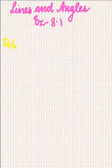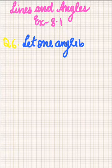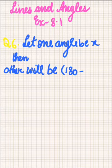First of all, we are given the difference between the 2 supplementary angles, and the difference is 48 degrees. We can suppose that let 1 supplementary angle be X. Then the other will be 180 minus X, because since these are supplementary angles, their sum will be 180 degrees.